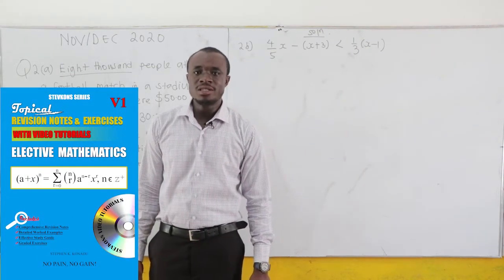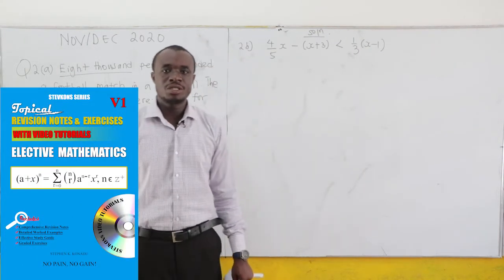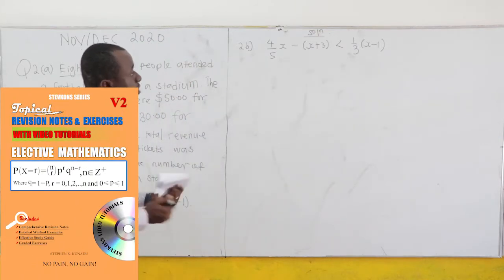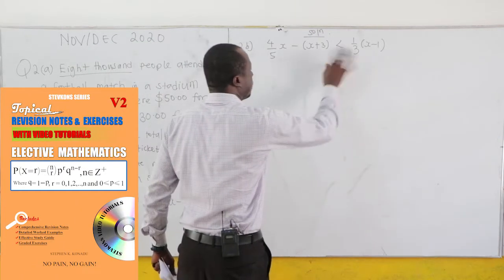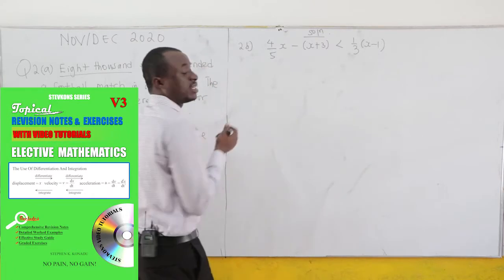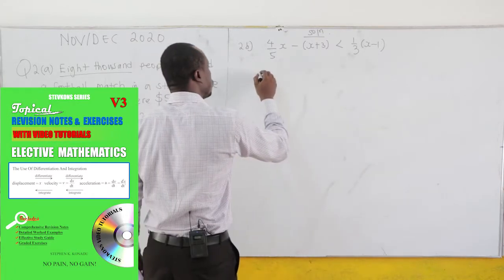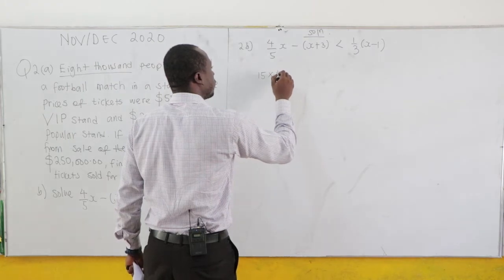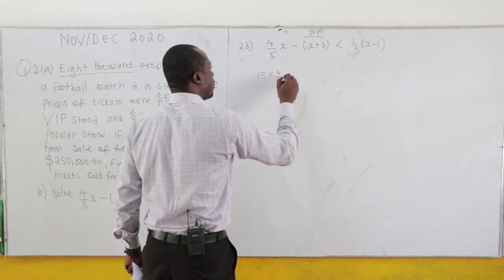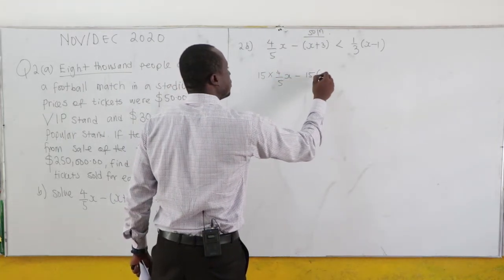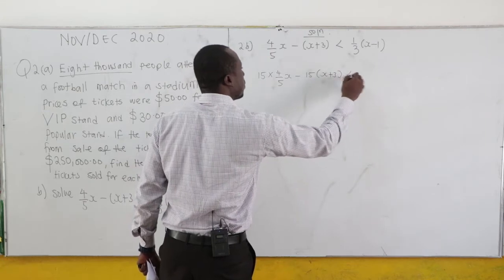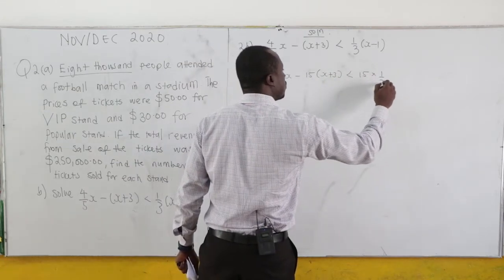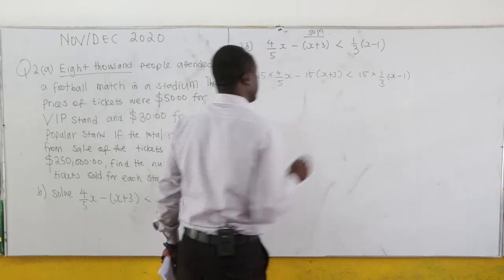NOVDEK 2020, question number 2B. We have been told to solve this inequality. The LCM is 15, so we multiply each term by 15. We get 15 times (4 over 5)X, minus 15 times (X + 3), and then 15 times (1 over 3)X minus 1.